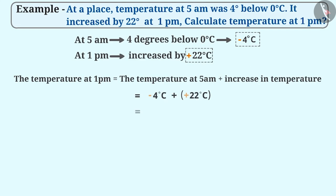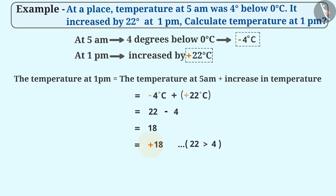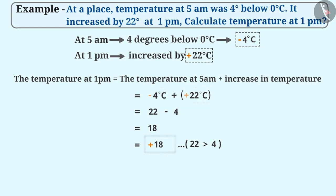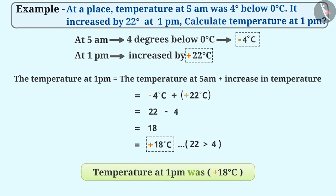Then we will subtract the smaller numerical value, that is 4, from the greater numerical value, that is 22, and get a result of 18, and prefix the sign of the greater numerical value to the result. This means the positive sign of 22. Therefore, the result of addition of minus 4 degrees centigrade and plus 22 degrees centigrade is plus 18 degrees centigrade. Thus, the temperature at 1 pm was plus 18 degrees centigrade.